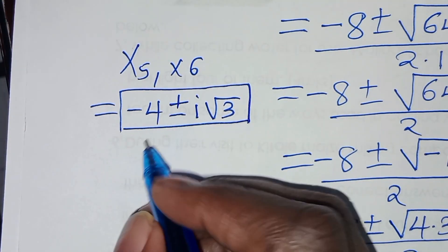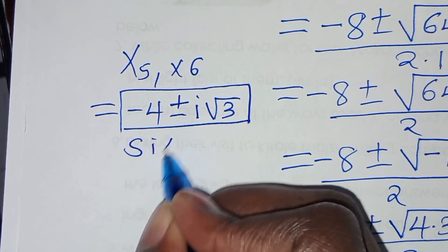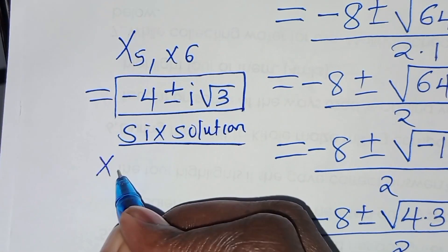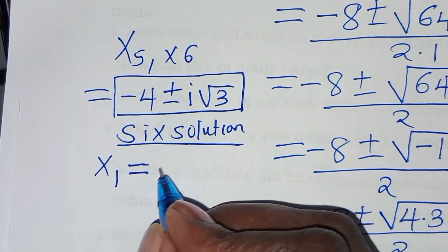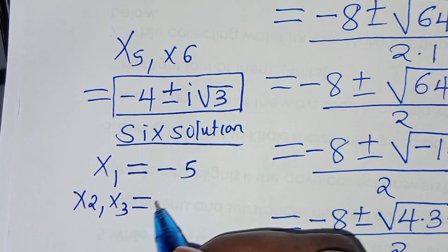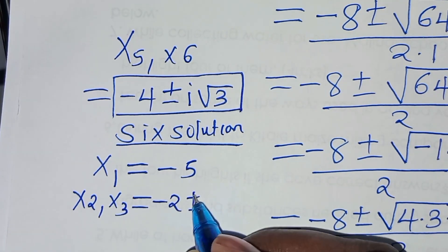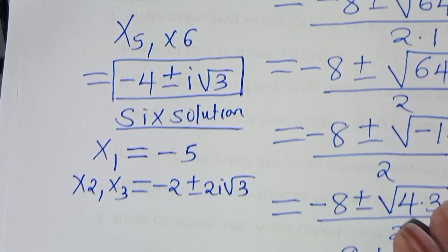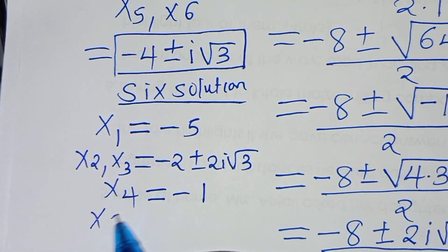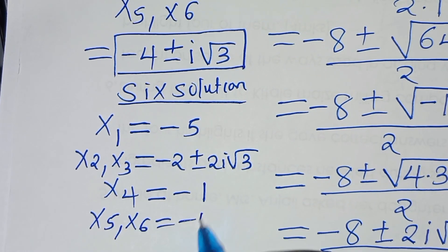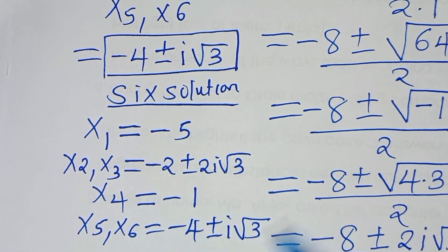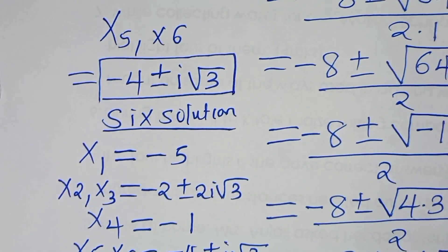So we have 6 solutions to this problem. x1 equals minus 5, x2 and x3 equal minus 2 plus or minus 2i square root of 3, x4 equals minus 1, and x5 and x6 equal minus 4 plus or minus i square root of 3. This totals 6 solutions to this algebra problem.